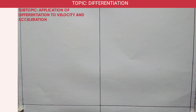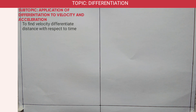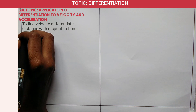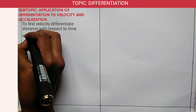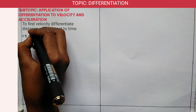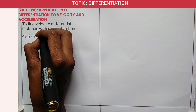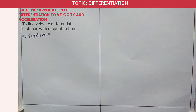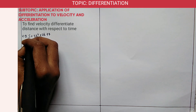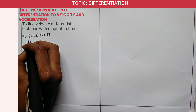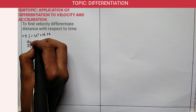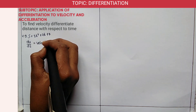The second concept: to find velocity, differentiate s with respect to t. For example, if s is equal to 3t squared plus 2t plus 7, and you are told to find the velocity, you differentiate s with respect to t — that gives you velocity, and the units for velocity are meters per second.